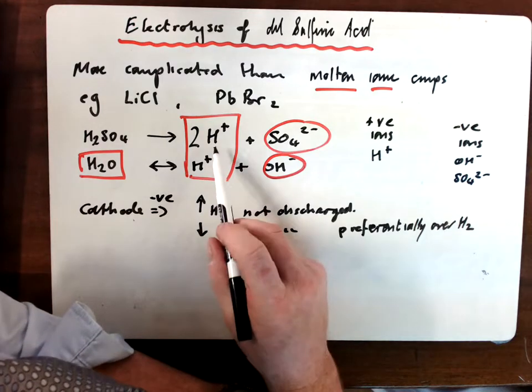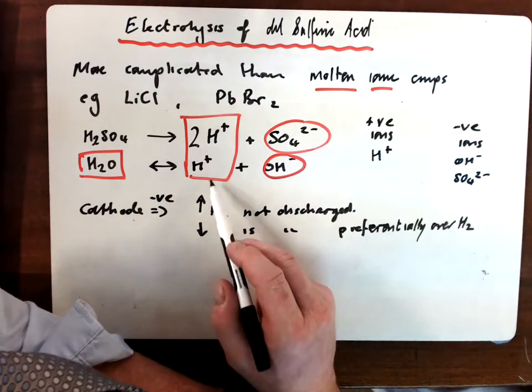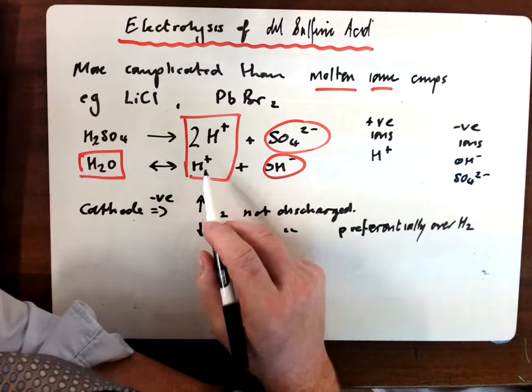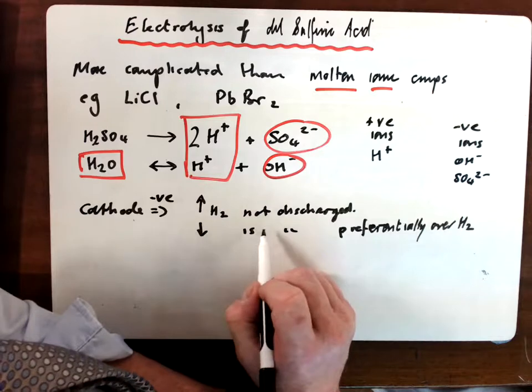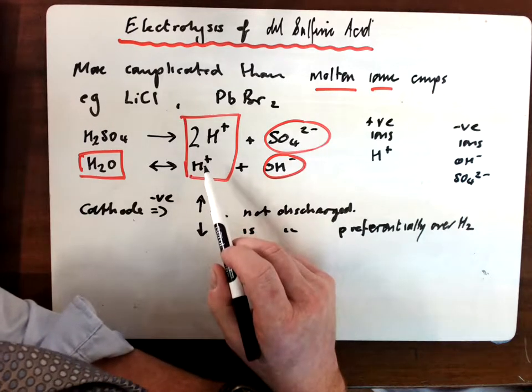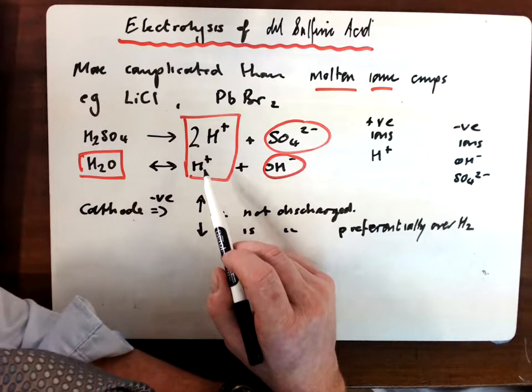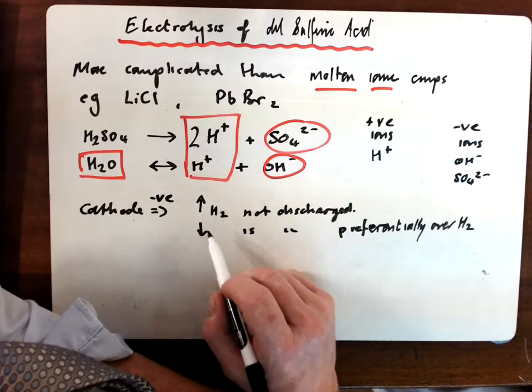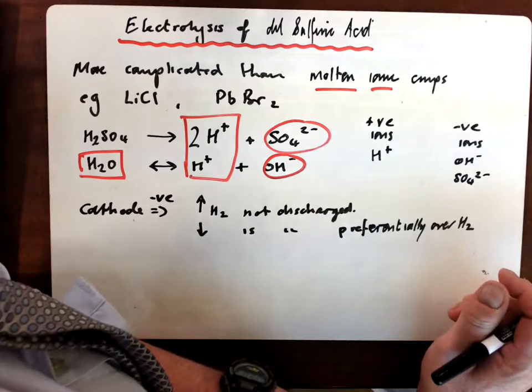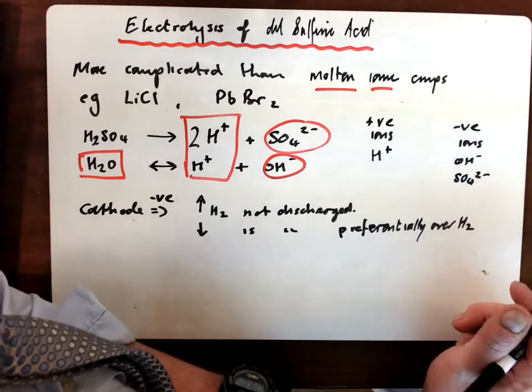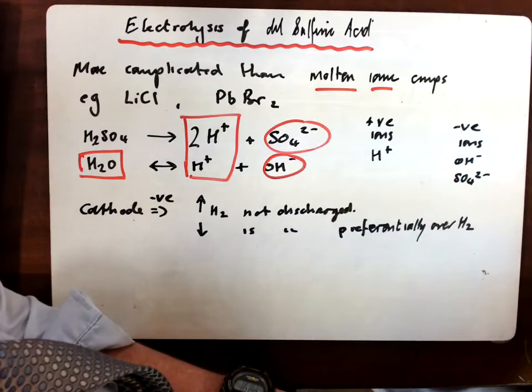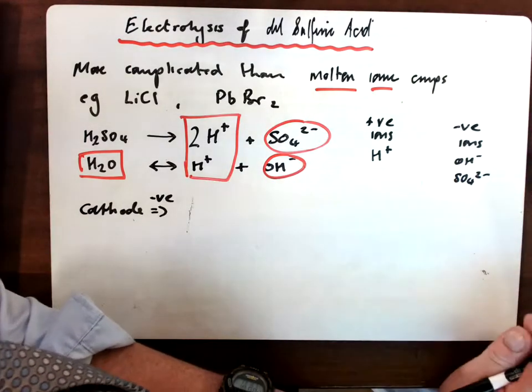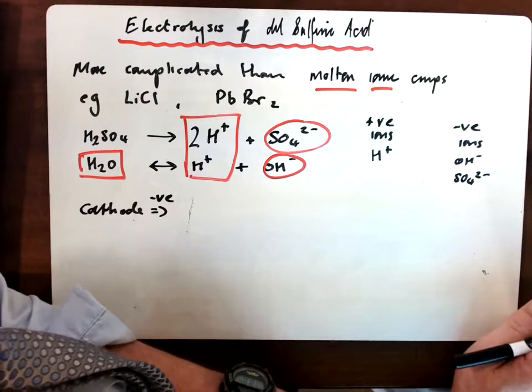If I have something in there that is more reactive than hydrogen, so potassium as I said or magnesium, and I have hydrogen ions in there, the hydrogen ion gets discharged. If I have anything below hydrogen ions that's a positive ion in my solution, for example iron or copper or silver, then those things would get discharged preferentially over the hydrogen.